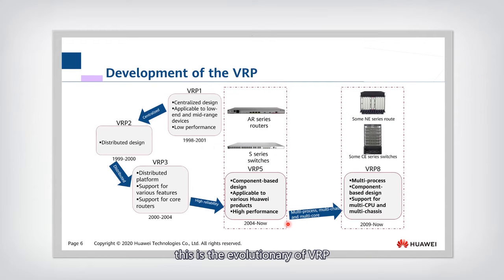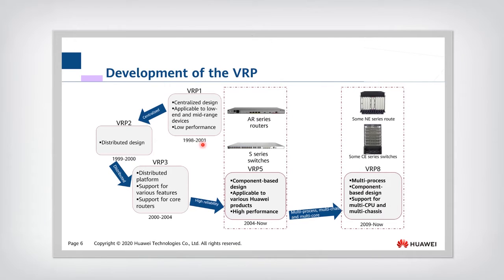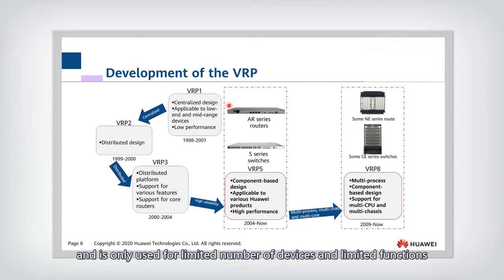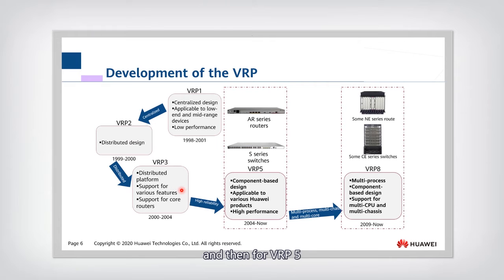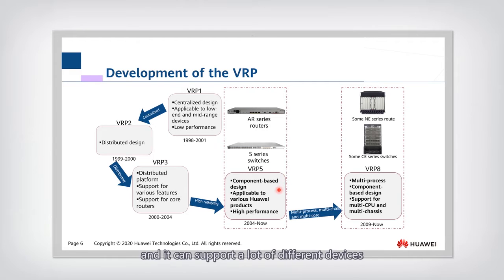This is the evolution of VRP. VRP-1 was first developed about 20 years ago — it used a centralized design and only supported a limited number of devices and functions. Then VRP-2 became a distributed design. VRP-3 became a platform supporting a variety of different features. VRP-5 introduced component-based design, support for many different devices, and much higher performance than previous versions.